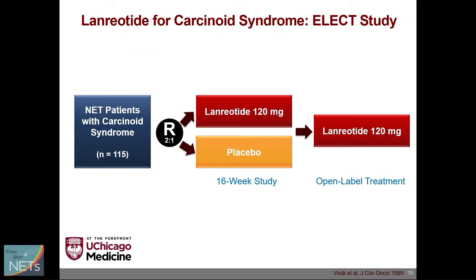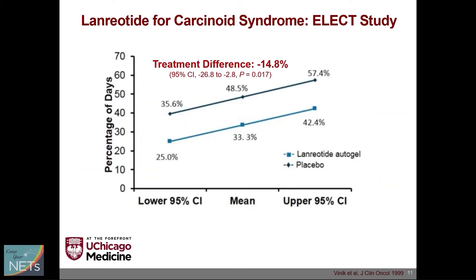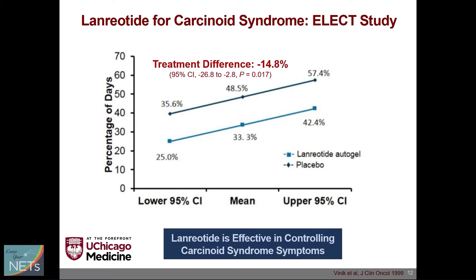Lanreotide also has benefit for treatment of carcinoid syndrome. This is the ELECT study, which enrolled 115 NET patients with carcinoid syndrome, randomized in a 2-to-1 fashion to lanreotide versus placebo for 16 weeks, followed by an open-label phase. Treatment with lanreotide led to a 15% decrease in the percentage of days where patients needed short-acting octreotide for rescue therapy, demonstrating that lanreotide is also effective in controlling carcinoid syndrome symptoms.